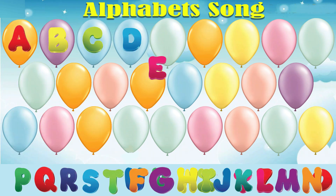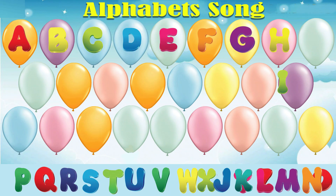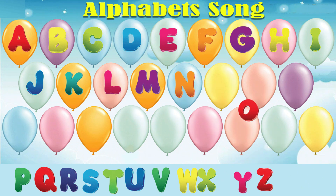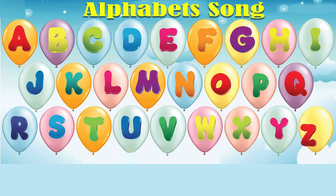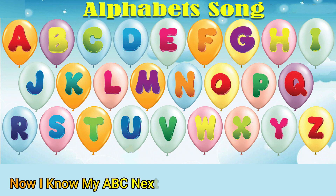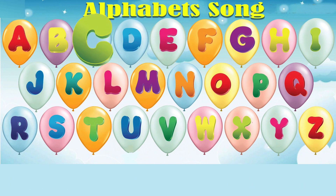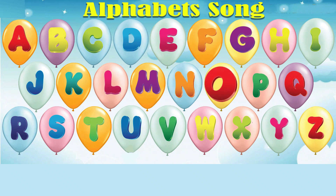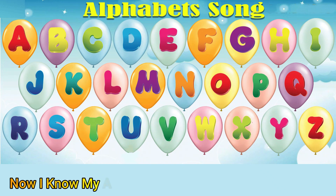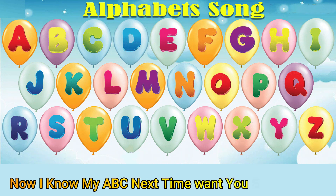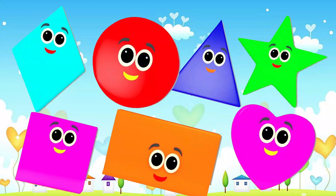A, B, C, D, E, F, G, H, I, J, K, L, M, N, O, P, Q, R, S, T, U, V, W, X, Y, and Z. Now I know my ABCs. Next time won't you sing with me? A, B, C, D, E, F, G, H, I, J, K, L, M, N, O, P, Q, R, S, T, U, V, W, X, Y, and Z. Now I know my ABCs. Next time won't you sing with me?